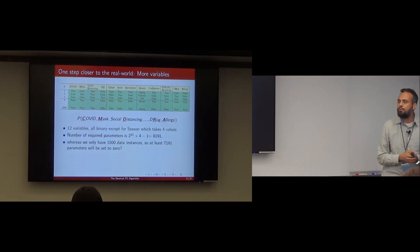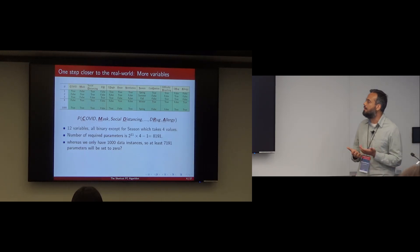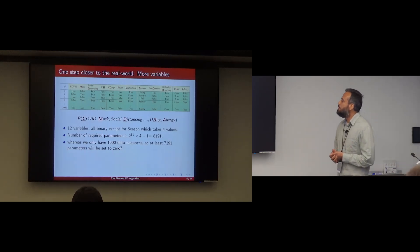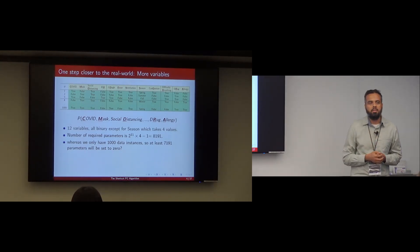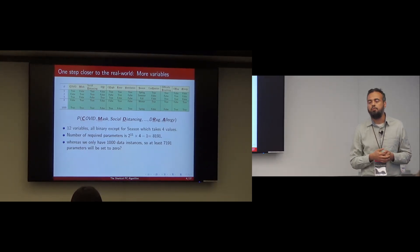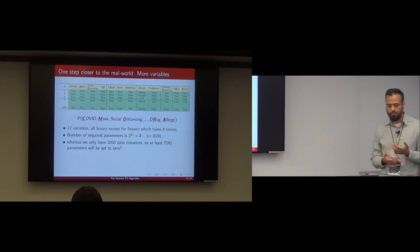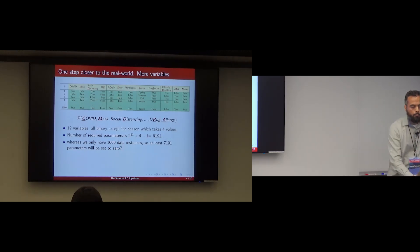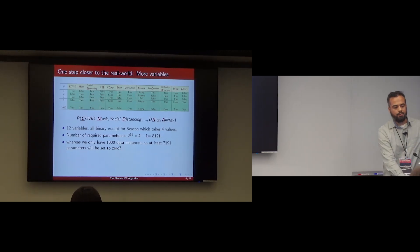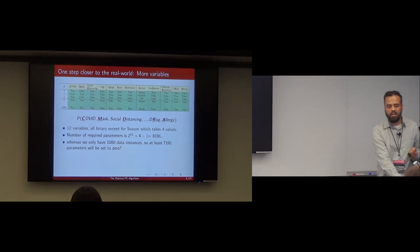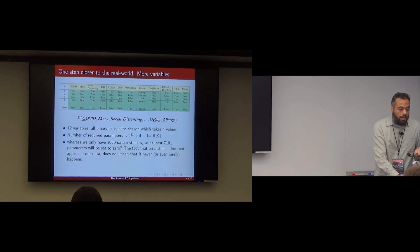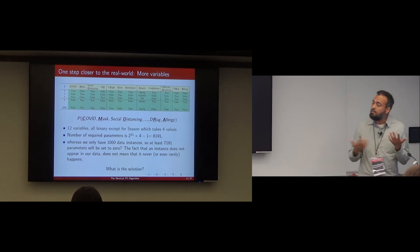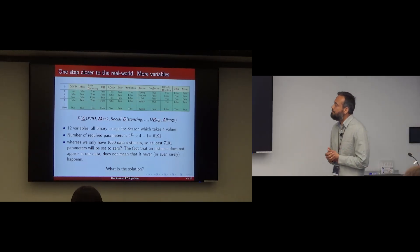There's already a problem here: to model this joint probability distribution without making any assumptions, the parameter count exceeds your sample size. You can't simply set the remaining 7,000 parameters to zero. So what's the solution?